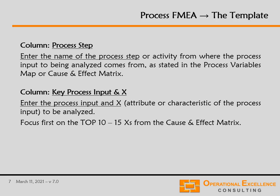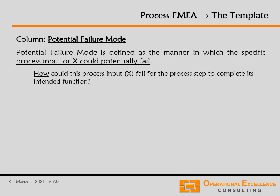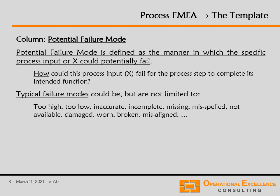Then we need to ask ourselves and our team how this process input and X can fail. The question is not why it would fail or what would be the result of that failure, but how can that process input or X fail? For example, if the process input is data and the X — the attribute or characteristic — is accuracy, then the failure mode would be that the data is inaccurate.